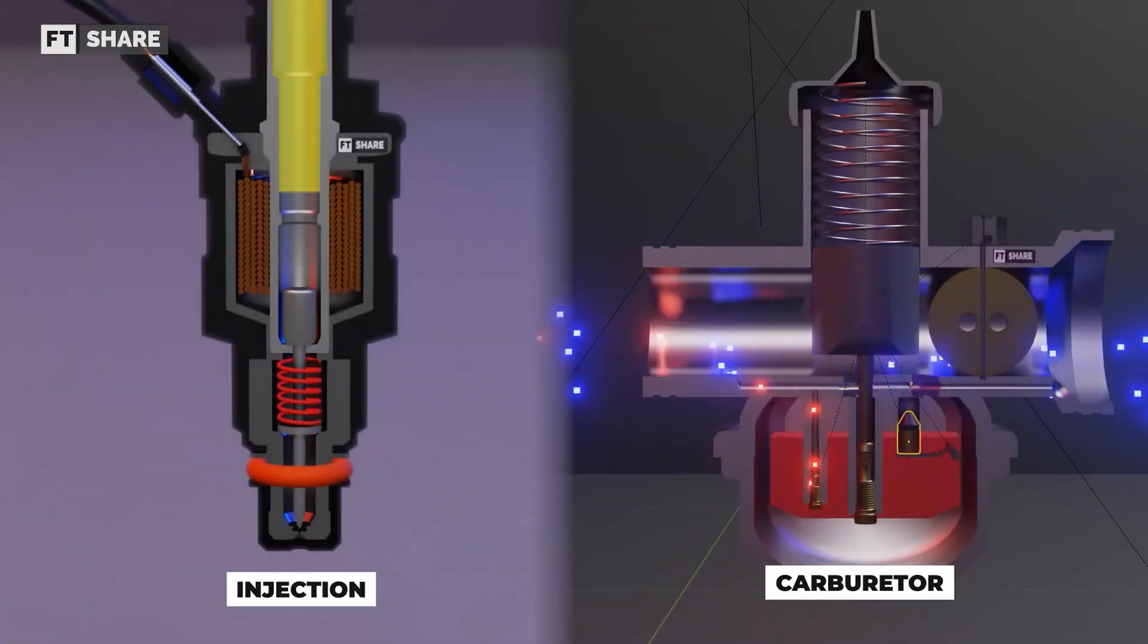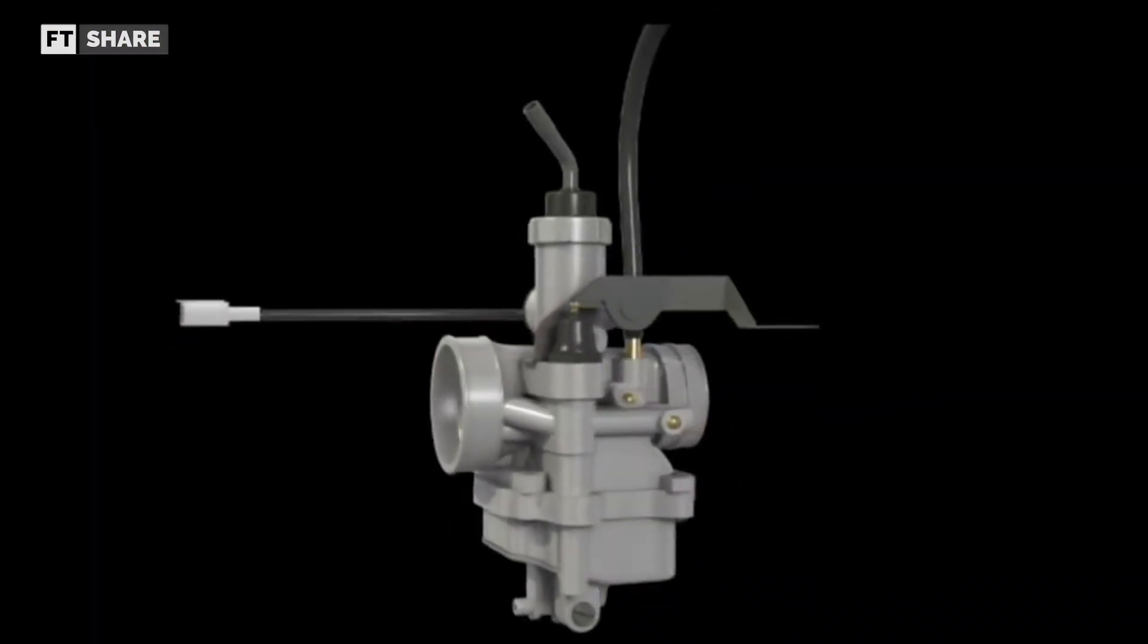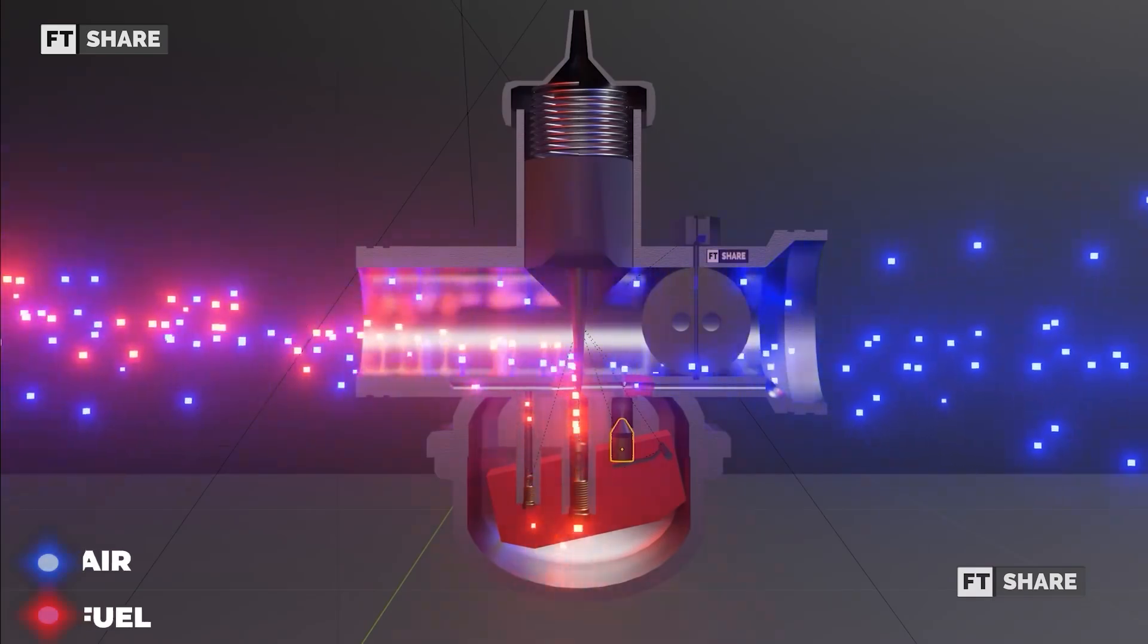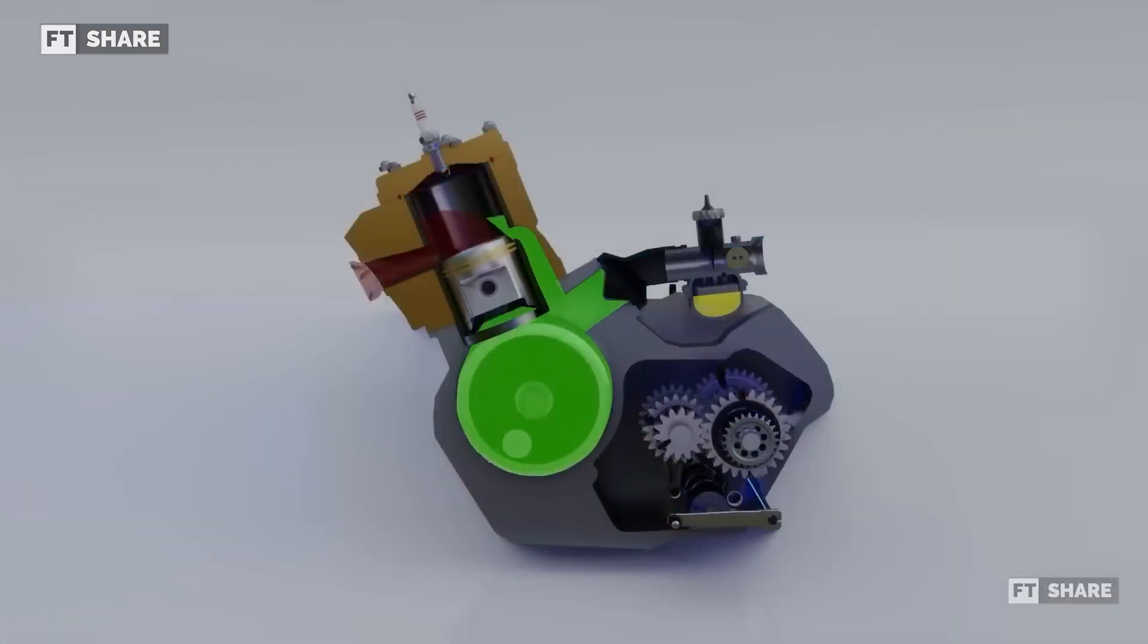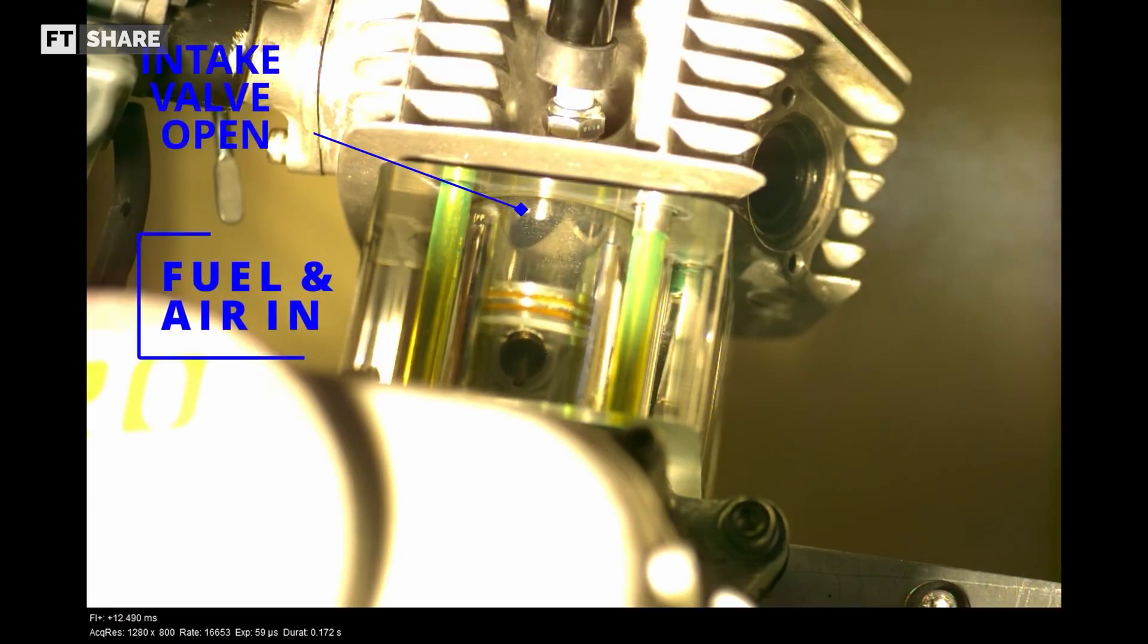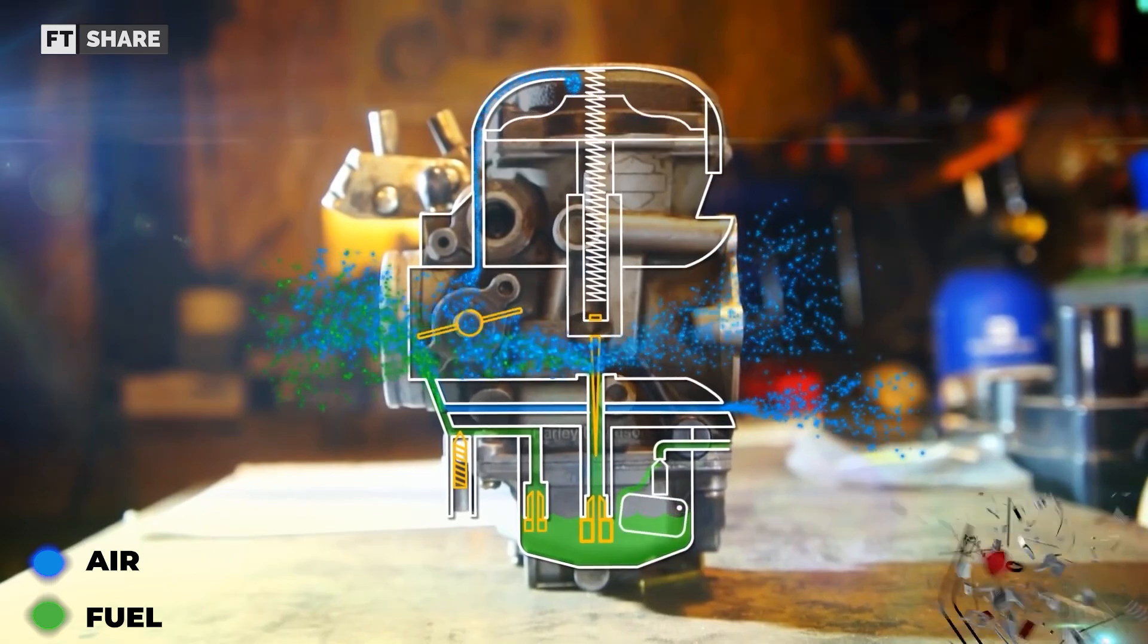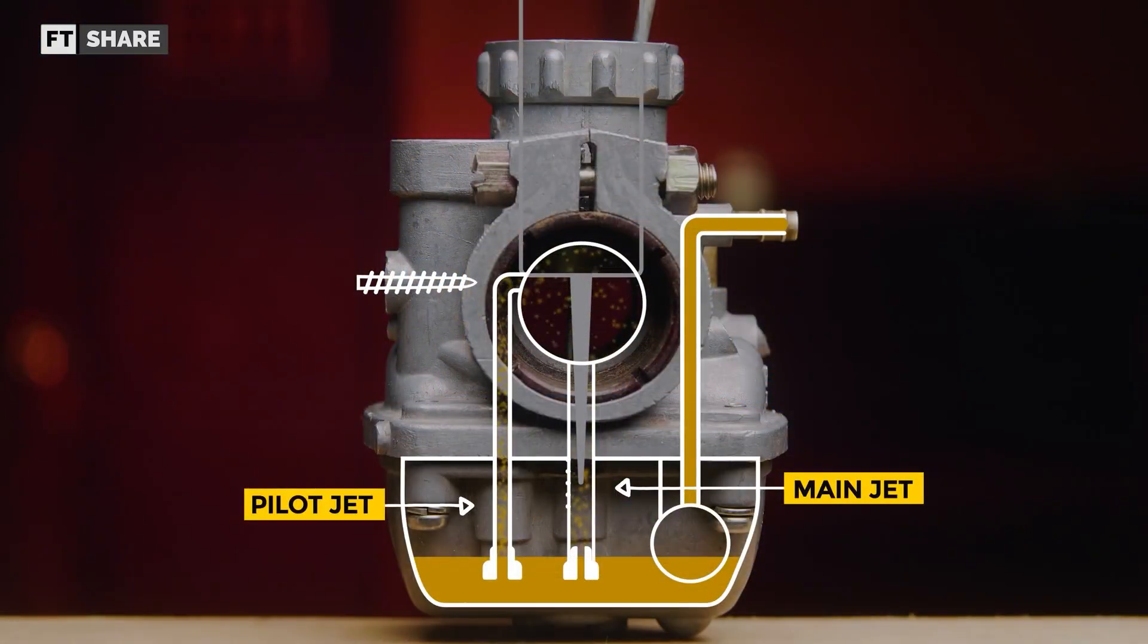Basically, these two devices have a function to mix fuel and air at the right ratio. For the first device, the carburetor, this tool has a working mechanism that is highly dependent on engine capacity and engine speed. When the intake step occurs, there will be a negative pressure that produces suction power. This low pressure or vacuum causes the movement of gasoline and air through the main jet when the venturi is open.